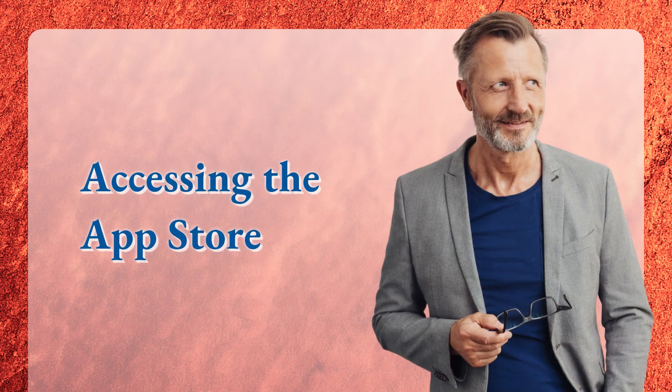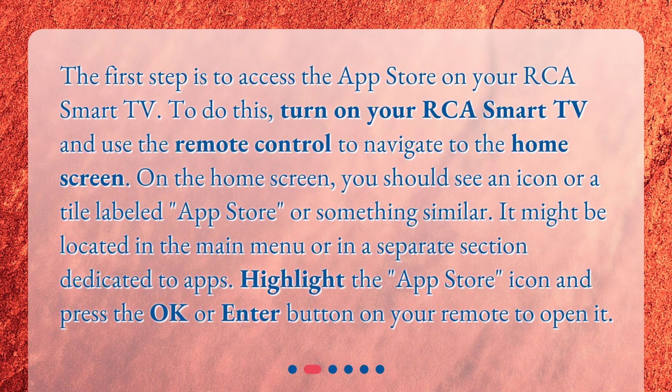Accessing the App Store. The first step is to access the App Store on your RCA Smart TV. To do this, turn on your RCA Smart TV and use the remote control to navigate to the home screen. On the home screen, you should see an icon or a tile labeled App Store or something similar. It might be located in the main menu or in a separate section dedicated to apps. Highlight the App Store icon and press the OK or Enter button on your remote to open it.